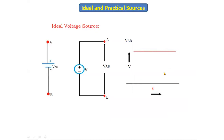There is no change in the voltage even if you increase the current continuously. That's why it is called an ideal voltage source — the voltage is constant. In an ideal voltage source there is no internal resistance, and we get constant voltage irrespective of the current value.